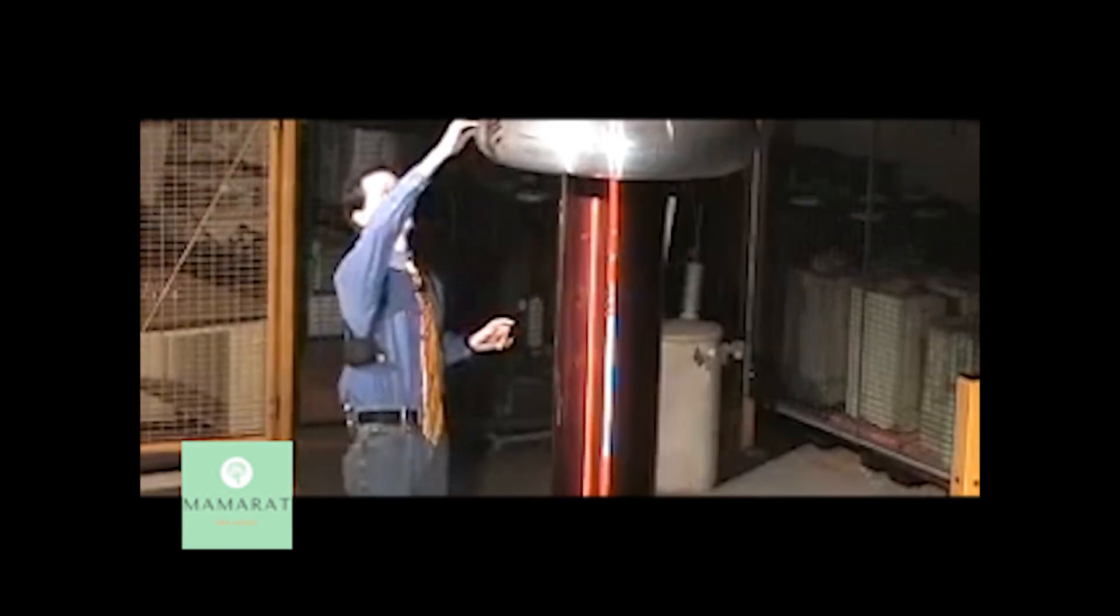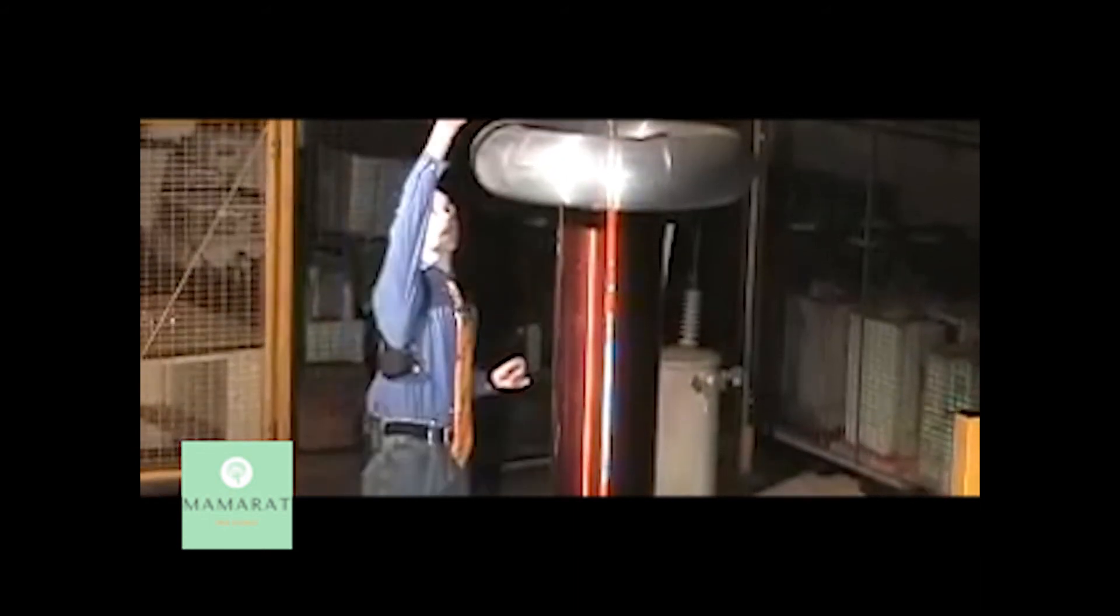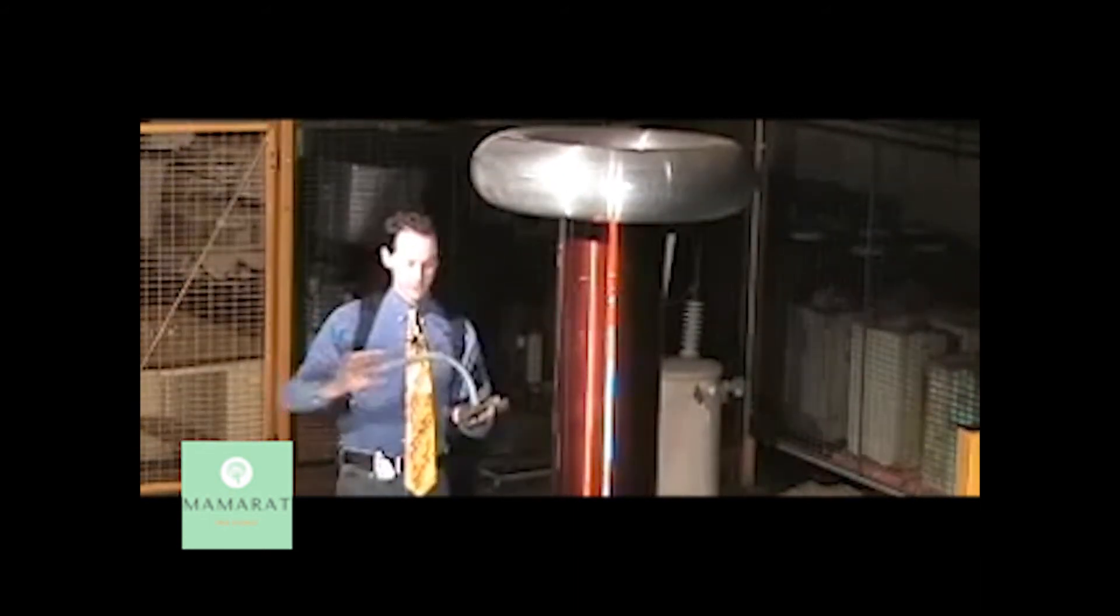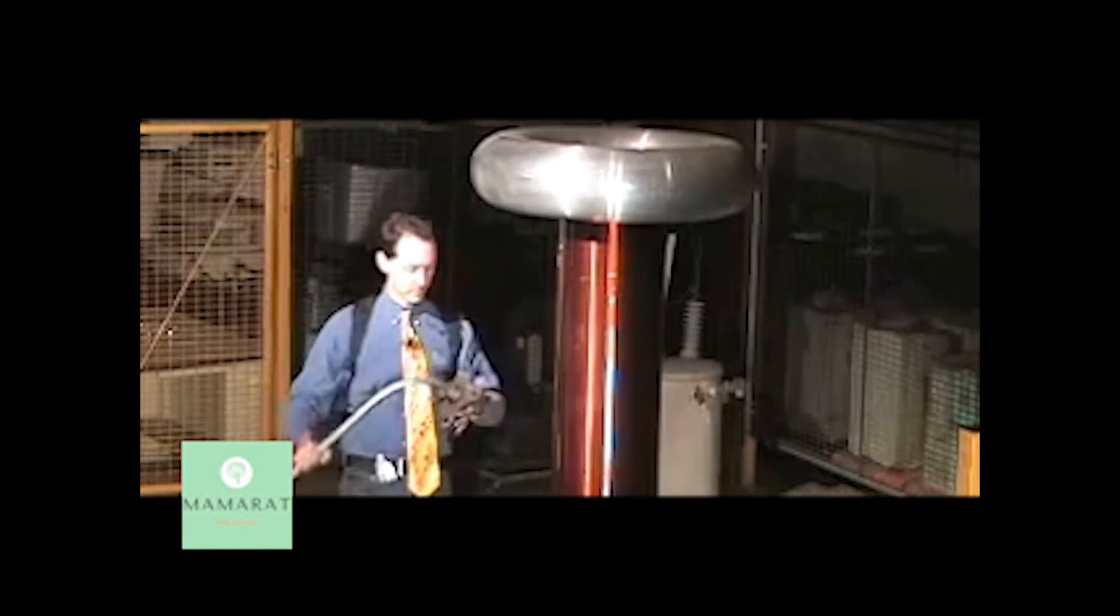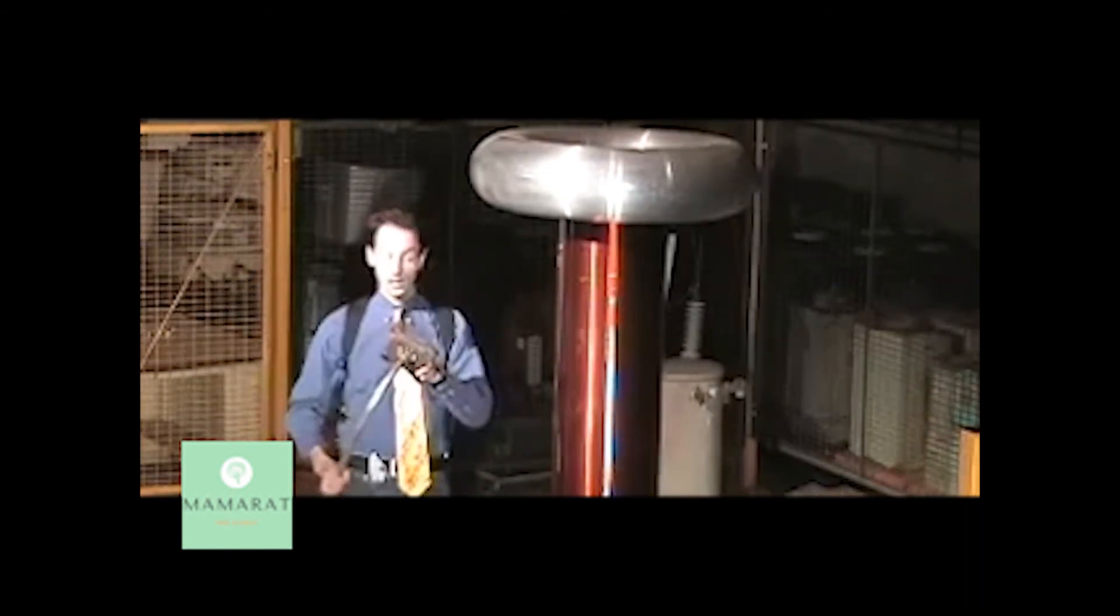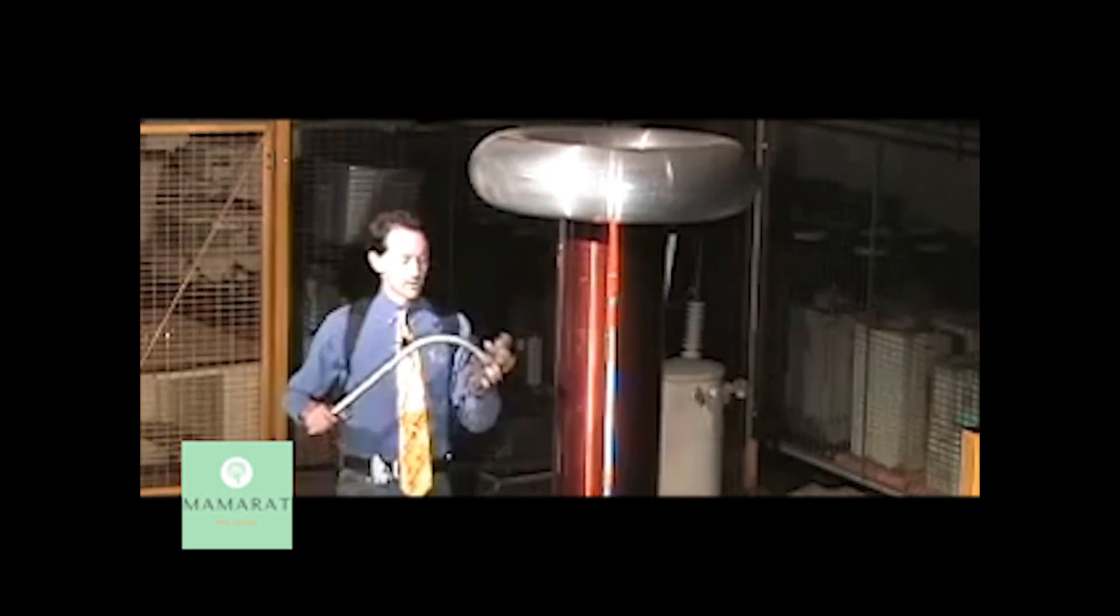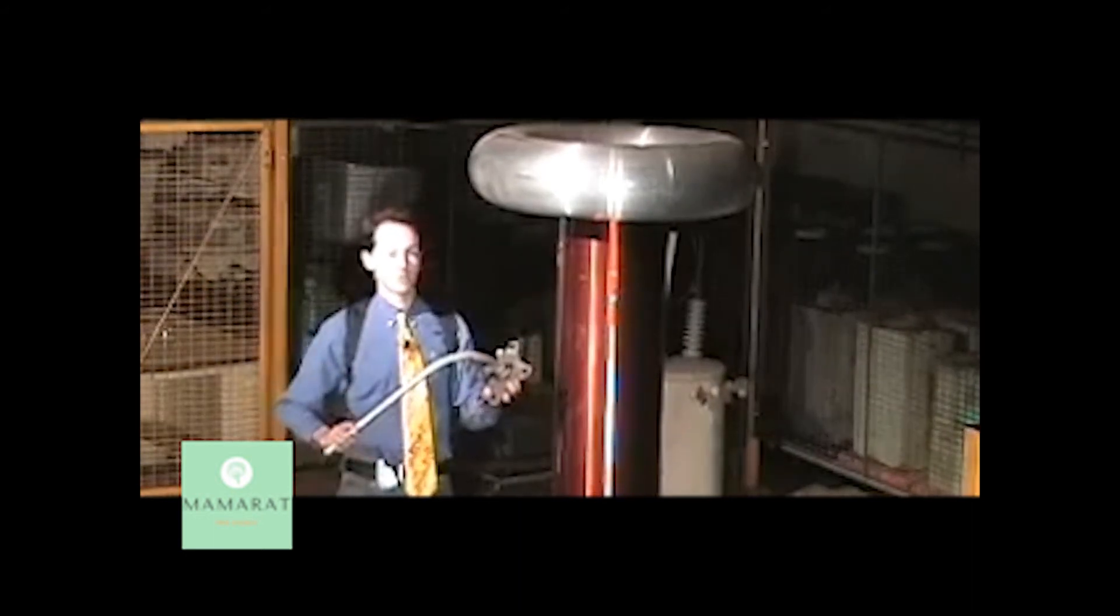Up above the toroid, we have a breakout point. The breakout point for us is just a simple piece of conduit and a cast iron base. This is actually an insulator base. This allows us to control where the discharge comes from.